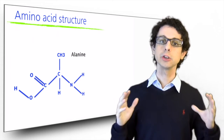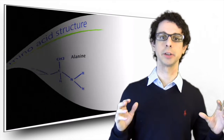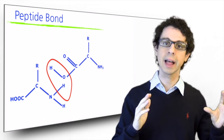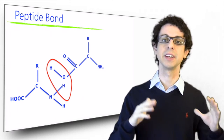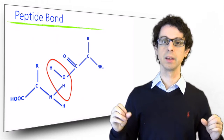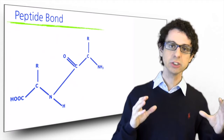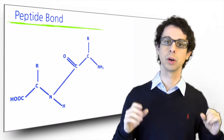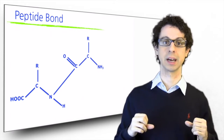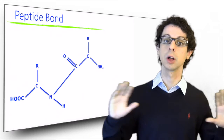Now that we have the amino acids, we want to build a protein. To do that, we have to link amino acids together with the peptide bond. A peptide bond is a covalent bond between the carbon of the carboxyl end of one amino acid and the nitrogen of the amino group of another amino acid. This is a condensation reaction with elimination of a molecule of water. Each amino acid can make two of these bonds — one on the carboxyl group side and one on the amino group side — and this way we can build chains of amino acids as long as we want.